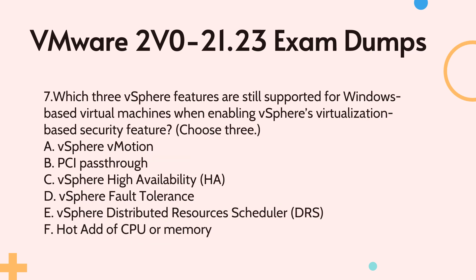Question 7: Which three vSphere features are still supported for Windows-based virtual machines when enabling vSphere's virtualization-based security feature? Choose three. A. vSphere vMotion. B. PCIe pass-through. C. vSphere High Availability (HA). D. vSphere Fault Tolerance. E. vSphere Distributed Resource Scheduler (DRS). F. Hot add of CPU or memory.